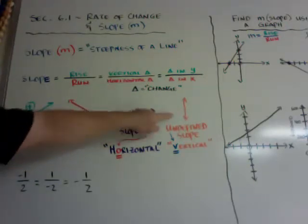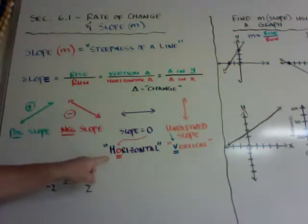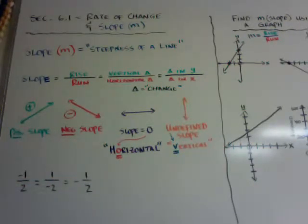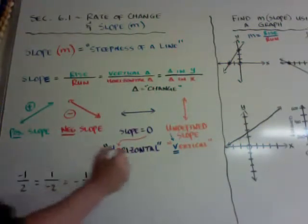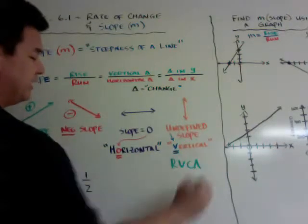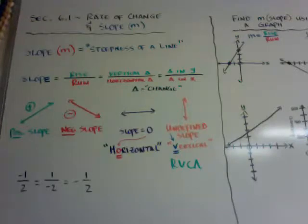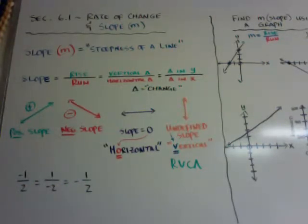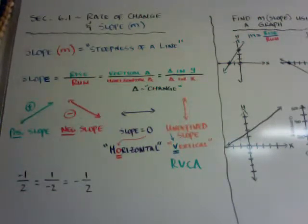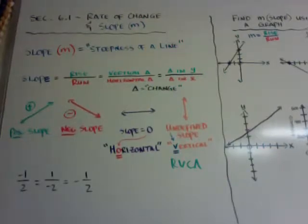One way you can remember these: a horizontal line is zero slope, and the undefined is the vertical. If you remember the R-U-C-A, they use the V as a U — just a way you can remember that. Also remember: negative 1 over 2 is the same as 1 over negative 2, which is the same as negative one-half. As long as there's only one negative, you can put it on the top, the bottom, or the left, and they all equal negative 0.5. So as long as you have one negative, the whole slope would be negative.